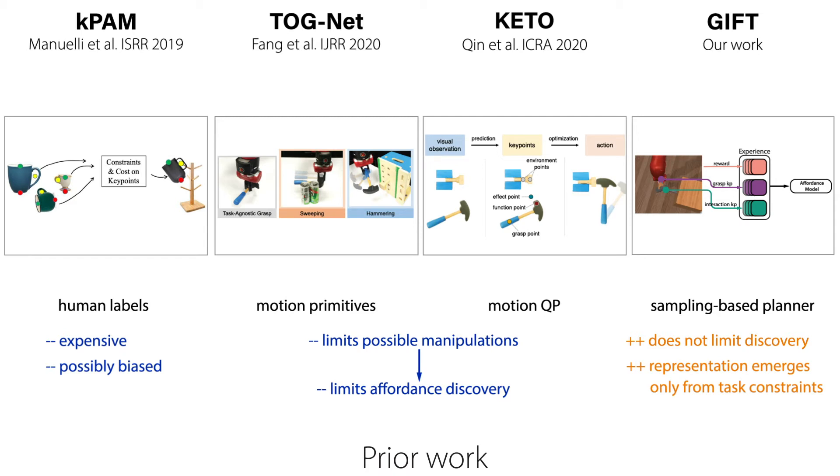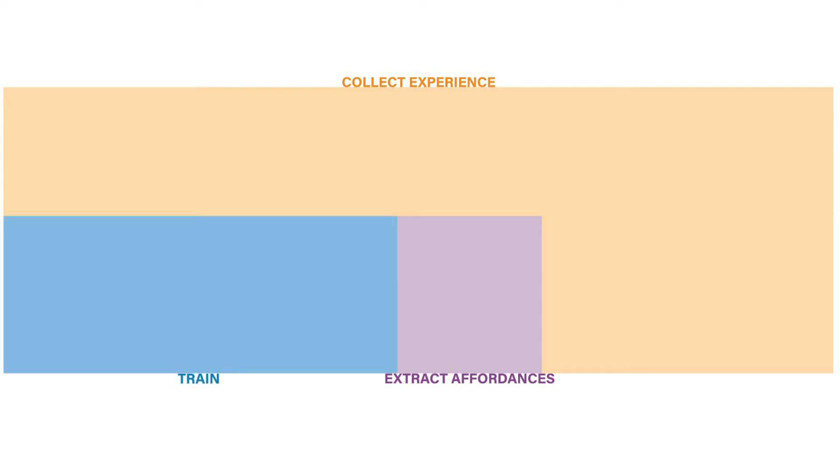Our method proceeds in three stages. First, we collect experience to learn from. Next, we extract training examples from the sample trajectories. And finally, we train our affordance model.